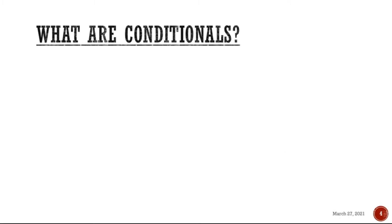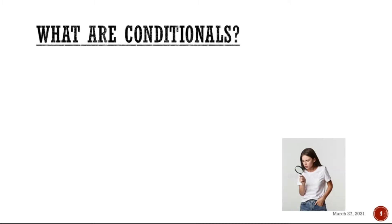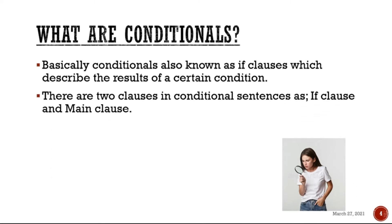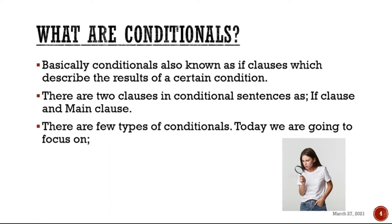Firstly, what are conditionals? Basically, conditionals — also called if-clauses — are used to describe the results of a particular, certain condition. There are two clauses in a conditional sentence: the if-clause and the main clause. There are a few types of conditionals — about five basic types — but today we are going to focus on three common ones: first, second, and third.